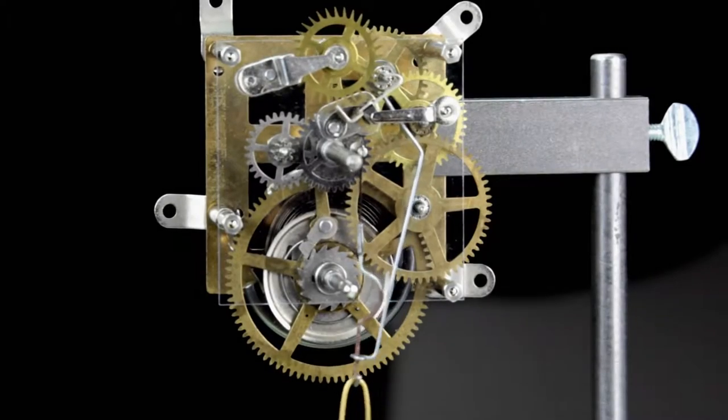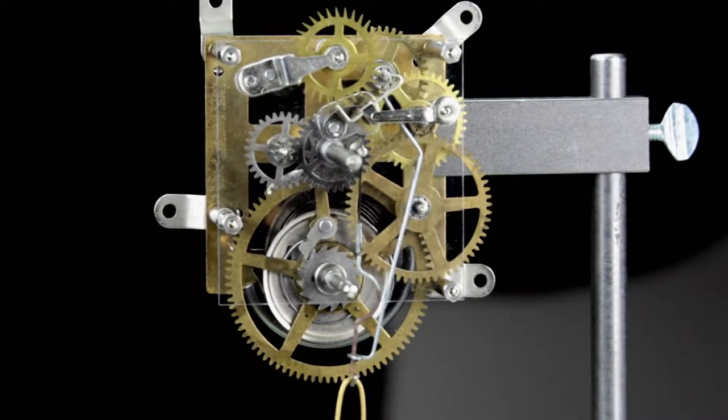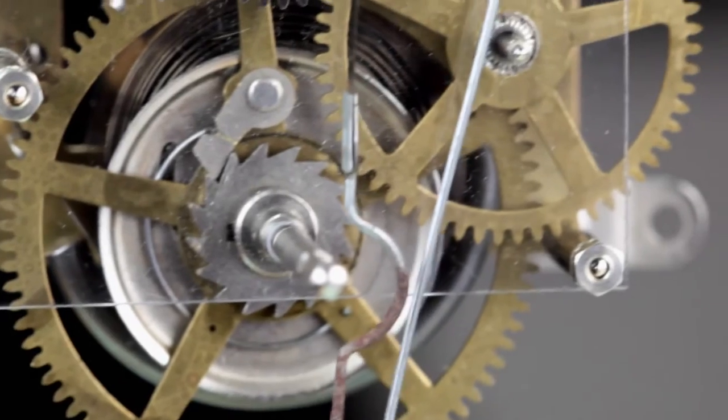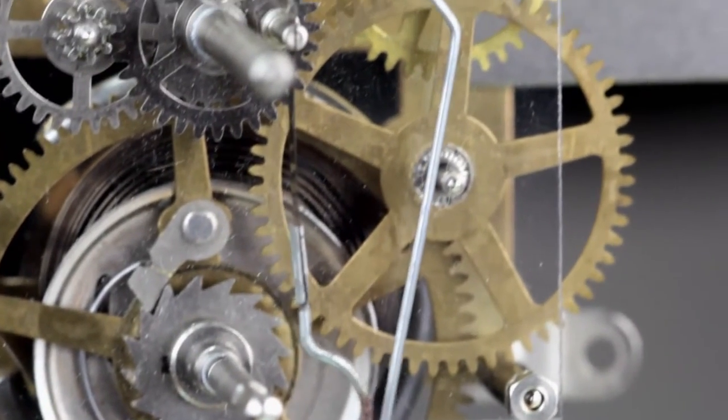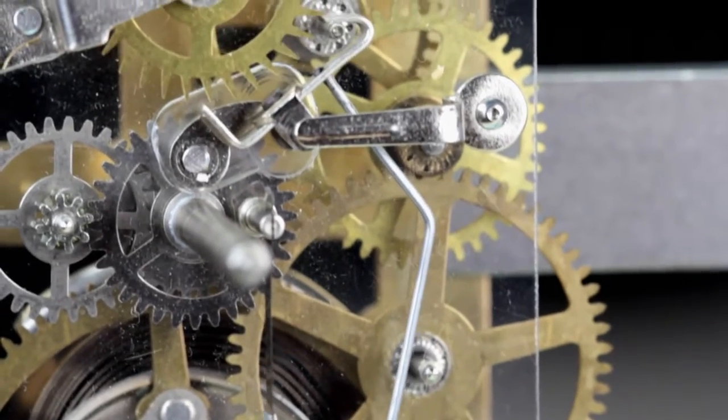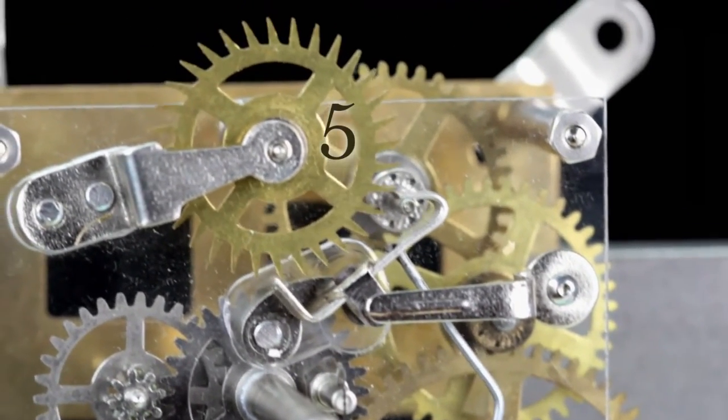The wheels in a train count from the power source up. In the going train, the mainspring assembly is wheel number one. The next wheel up the train that carries power from the mainspring is the second wheel, then the third wheel and the fourth. The last wheel in this train is the fifth wheel, the escape wheel.